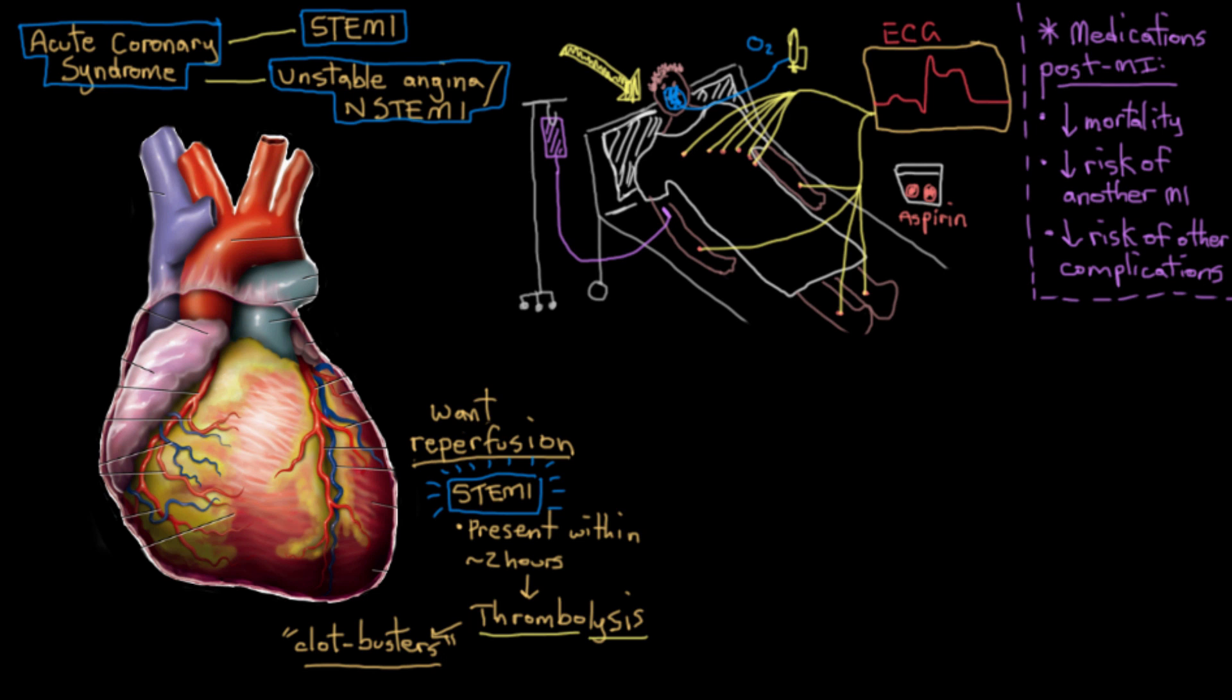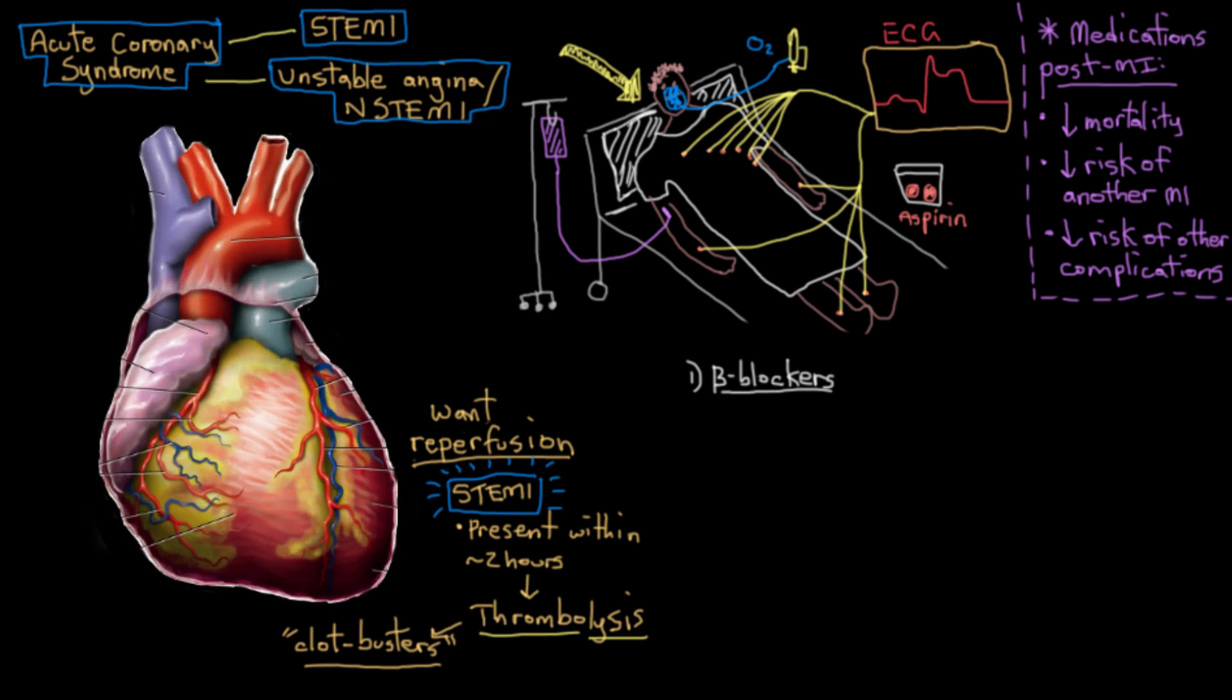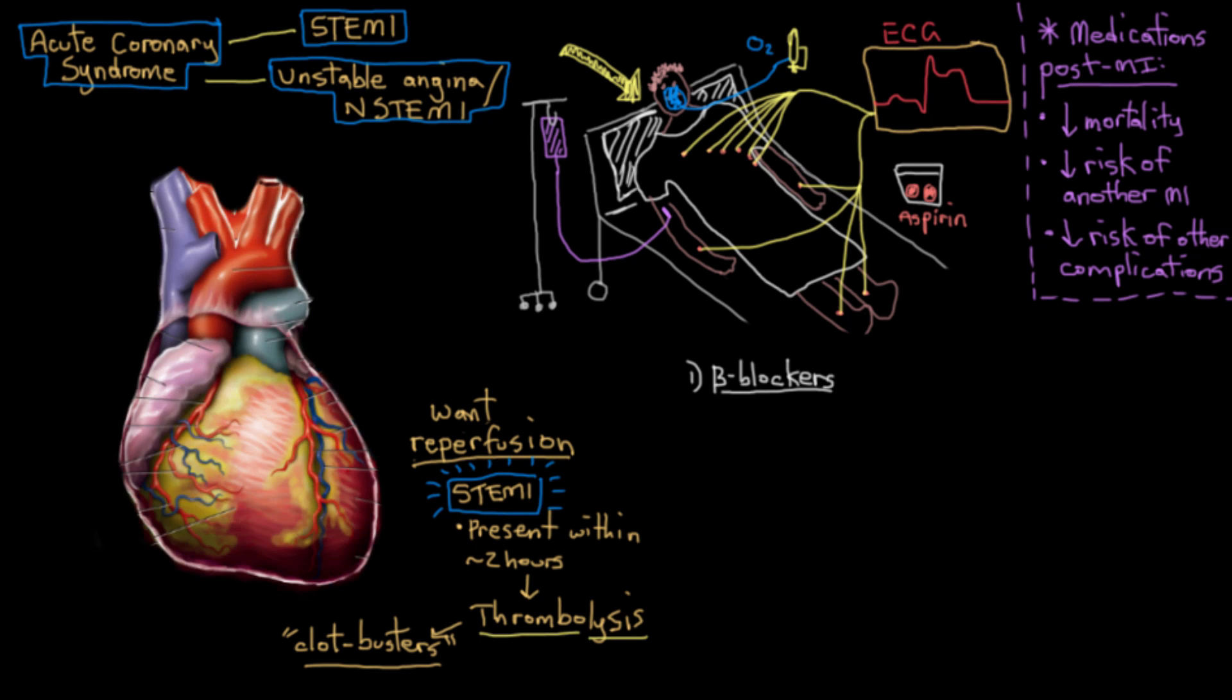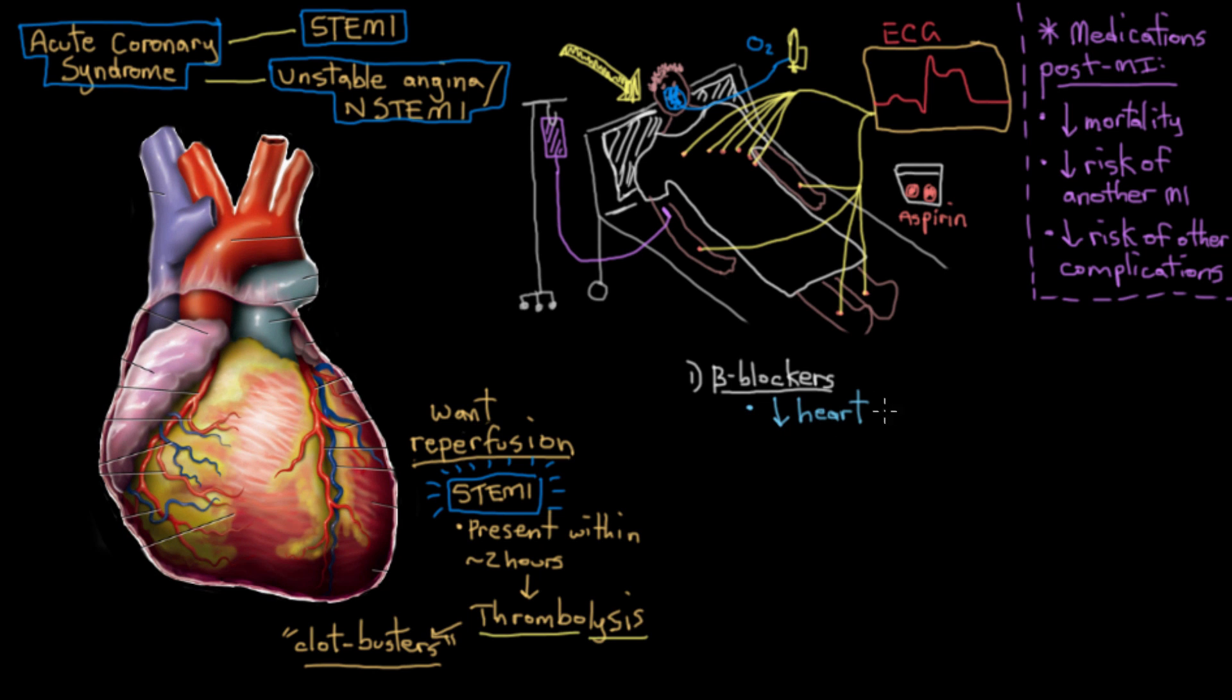What are these drugs? There are drugs that restore the oxygen supply and demand balance, like beta blockers. Beta blockers make the heart beat slower with fewer beats per minute and reduced force. Overall, this reduces the heart's oxygen demand because if the muscle isn't working as hard, it needs less oxygen.